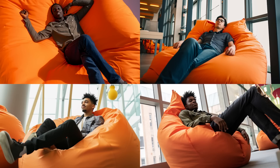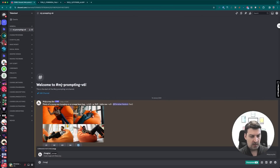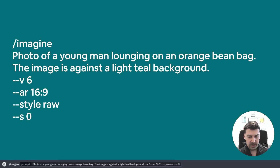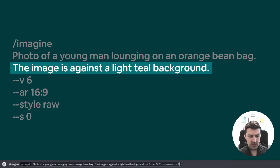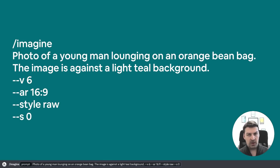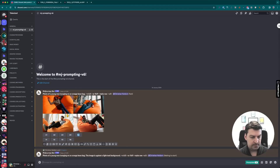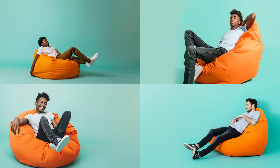So let's add some extra details, starting off by adding the following sentence to the end of the prompt: the image is against a light teal background. And this is already much closer to what our reference image looks like. We've got the guy sitting on the beanbag, the beanbag is orange, and we've got the teal background. This is pretty close, actually. But obviously there's still a whole bunch of other details that are still missing.